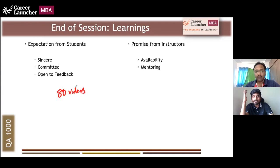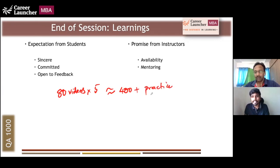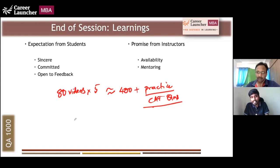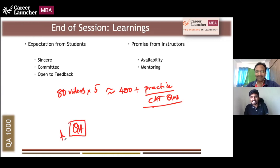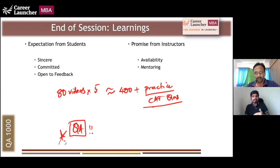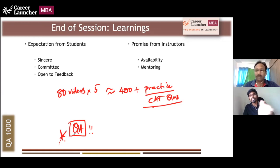These are actual CAT questions or questions we deem to be of CAT standard, making this a very good source of practice material. One disclaimer: if you are already scoring at the 99 percentile level in QA, you may not need this course. However, this course is very suitable for someone trying to jump from the 50th to the 90th percentile within two months — that is essentially our core focus.